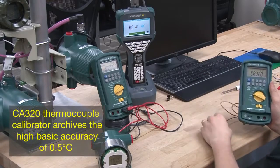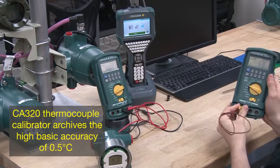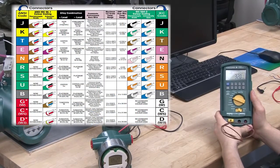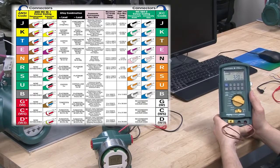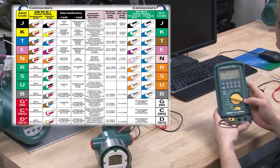The CA320 thermocouple simulate model calibrator achieves the high accuracy of 0.5 degrees C and corresponds to 16 types of thermocouple with the most common types being J, K, T, and E.